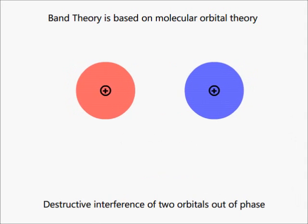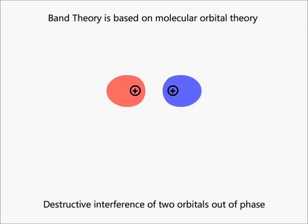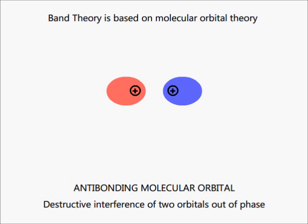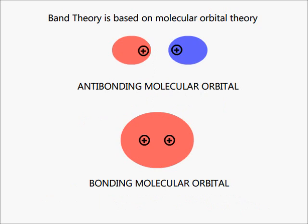Or they can combine destructively and result in an antibonding molecular orbital which has zero electron density region called a node. These molecular orbitals are polycentric and do not belong to any single metal ion but belong equally to the two interacting metal ions. The electrons in the molecular orbitals are said to have become delocalized.